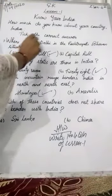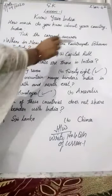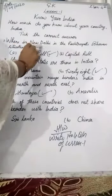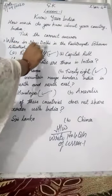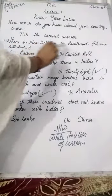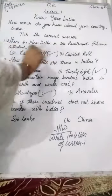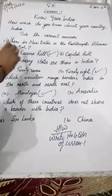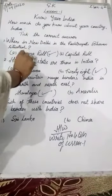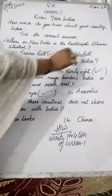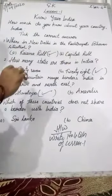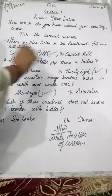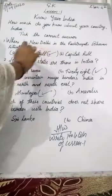Where in New Delhi is the Rashtrapati Bhavan situated? Two options are given: Raisina Hill and Capital Hill. The correct answer is Raisina Hill.